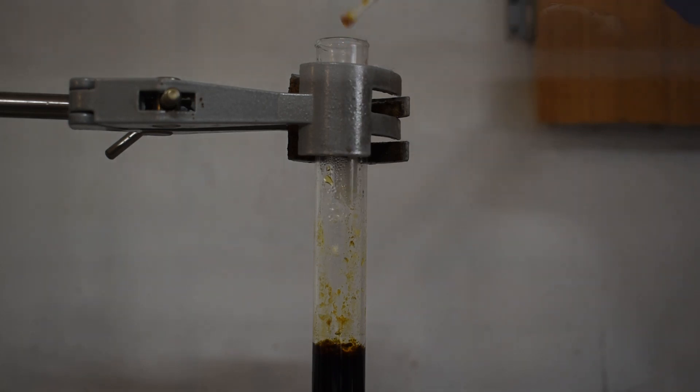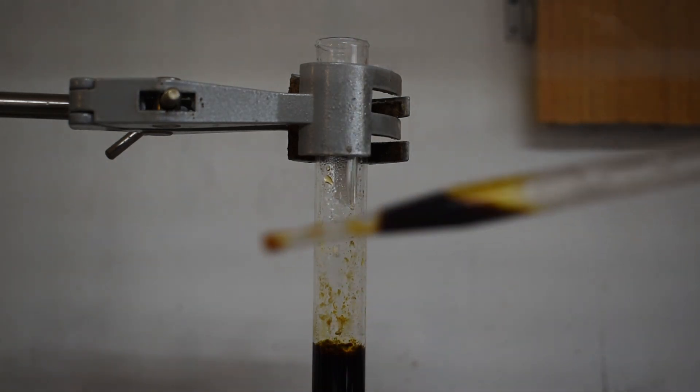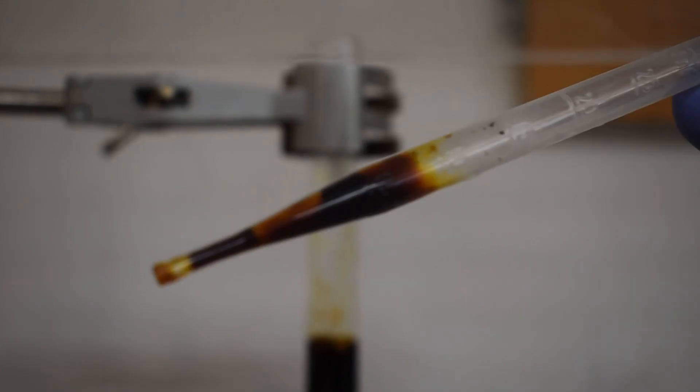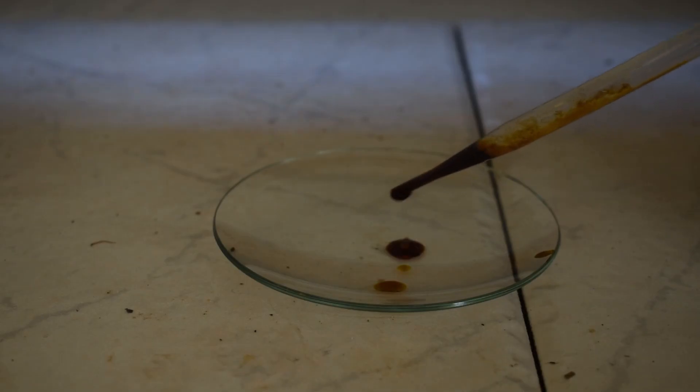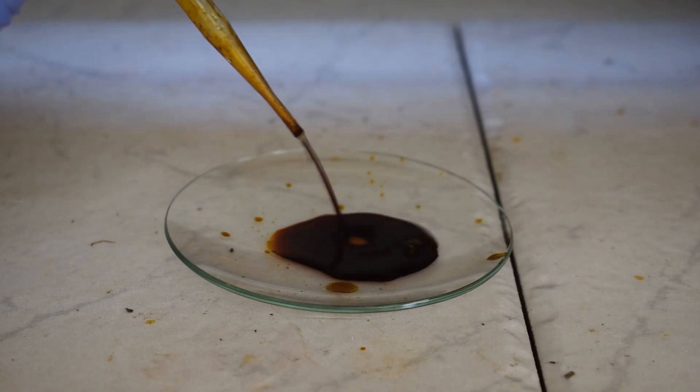After letting the mixture settle out, I sucked some of the solution up into a pipette, and here you can get a better look at the blood red color of the complex. I transferred this to a watch glass to crystallize out and I set it aside.